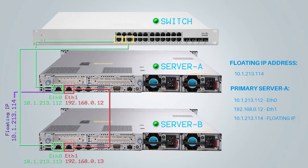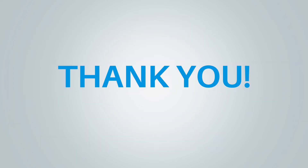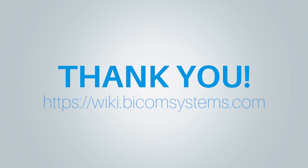For example, if server B is in primary state, the floating IP address will point to server B, or vice versa — if server A is in primary state, the floating IP address will point to server A. Thank you for watching this video, and if you need more help, be sure to visit Bicom Systems' wiki page.